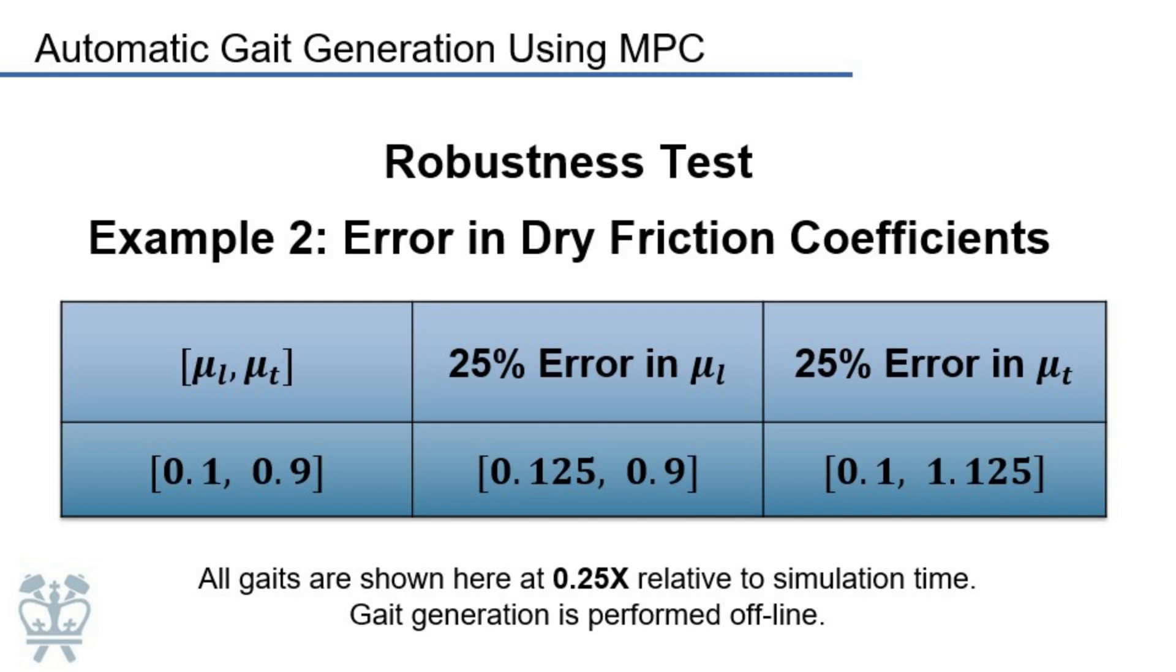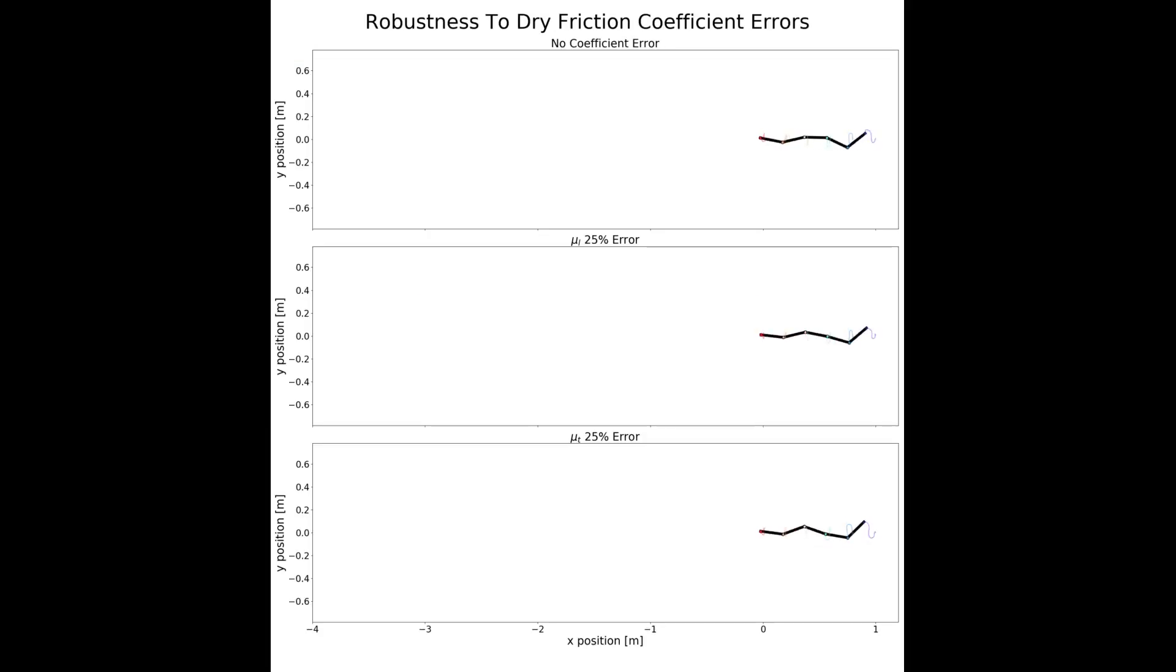Here we add a 25% error to the coefficients of viscous friction in MPC's internal model. Note that while errors in different parameters have different quantitative effects on performance, MPC gaits can still propel the snake forward, even in the presence of errors in the internal dynamics model.